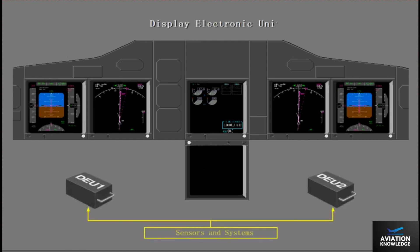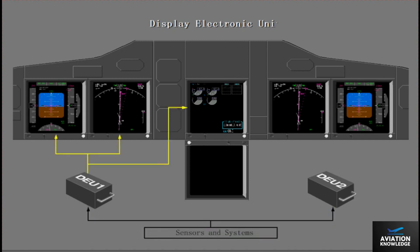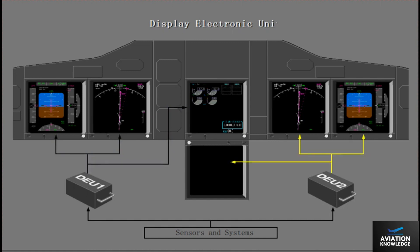Two Display Electronic Units, or DEUs, receive data from sensors and airplane systems. The DEUs supply these data to the DUs. Normally, DEU 1 supplies display data to the Captain Outboard, Captain Inboard, and Upper DUs. And DEU 2 supplies data to the First Officer Outboard, First Officer Inboard, and the Lower DUs.